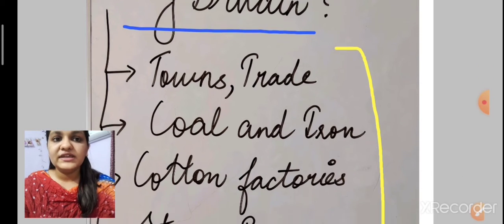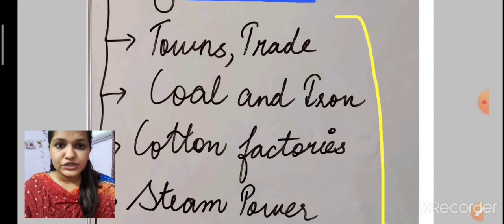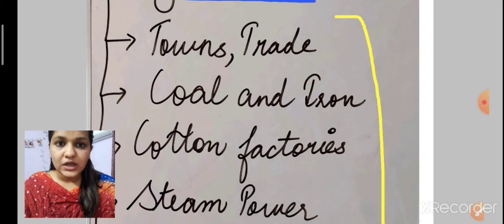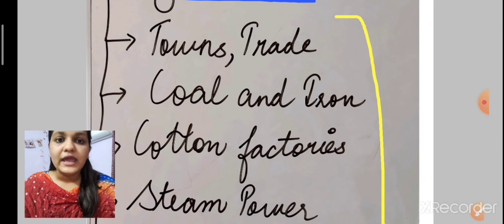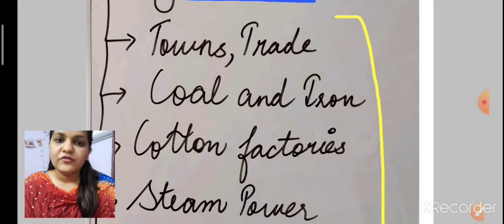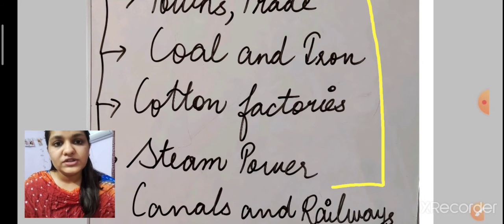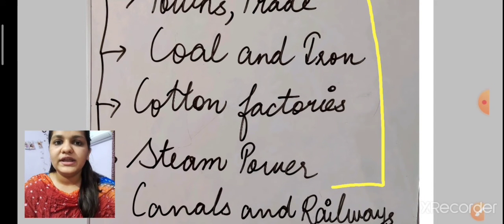There were new towns and trade which were very emerging. The population was in 19 towns in Europe where the population doubled, and 11 of these were part of Britain only. Also, there was the coming up of banks in Britain.